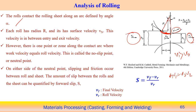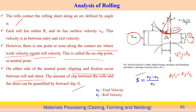The neutral point is the zone along the contact arc where the work velocity equals the roll velocity — it is also called the no-slip point. Apart from the neutral point, slipping and friction occur between the roller and the workpiece, and the friction direction will also differ. The amount of slip between the roller and the sheet can be quantified as S = (Vf − Vr) / Vr, where Vf is the final velocity and Vr is the roll velocity.